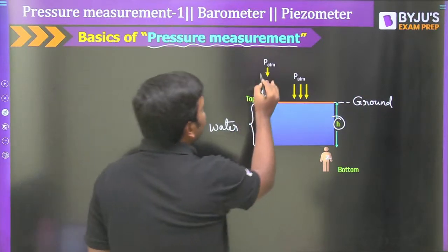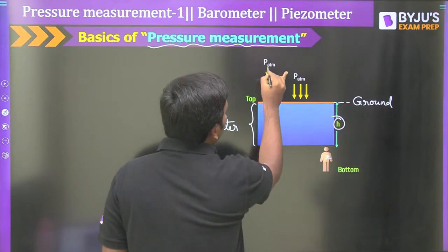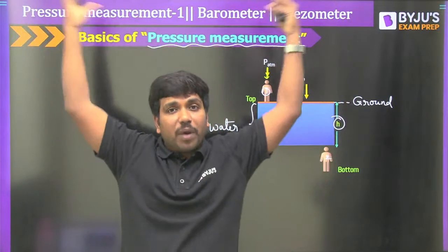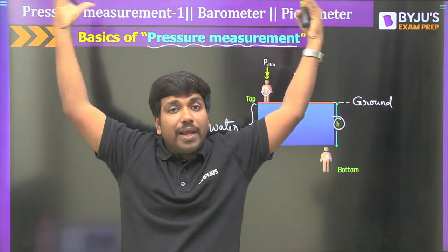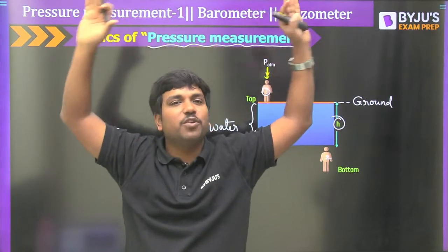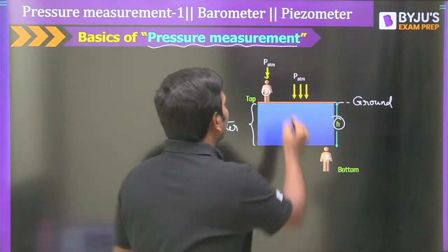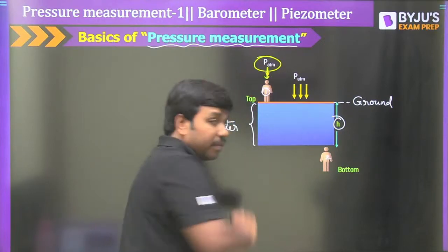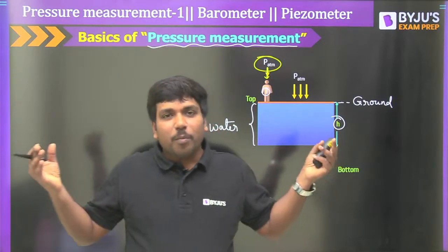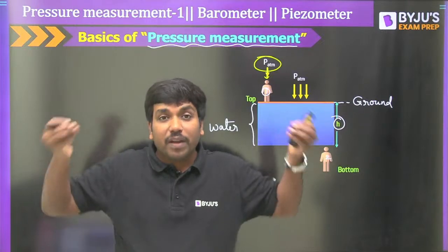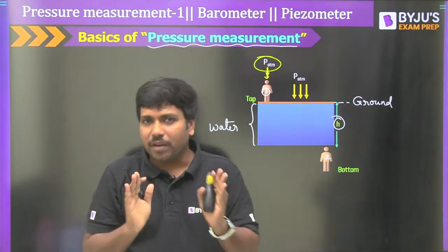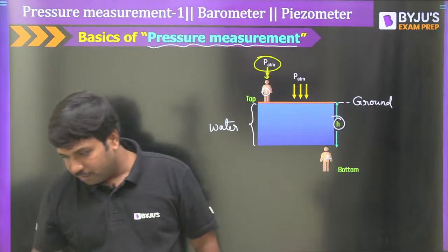On the first person standing on the ground, atmospheric pressure will be acting on his head. Many air particles are present and all of them apply pressure on the head of the person — that pressure is considered as atmospheric pressure. It is the pressure exerted by air molecules on the head of the person.